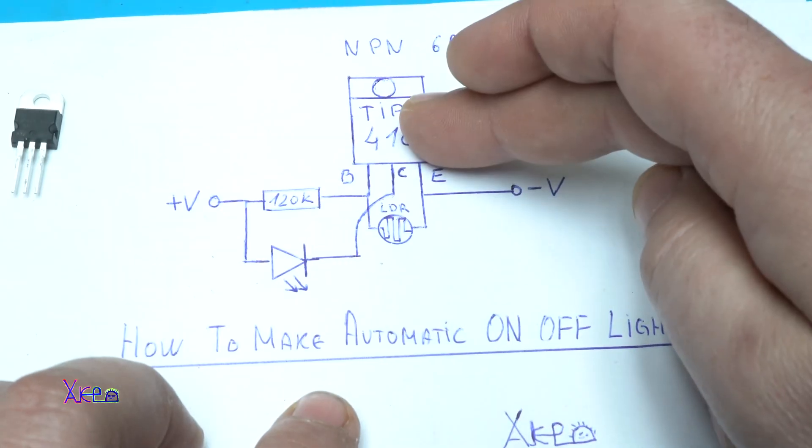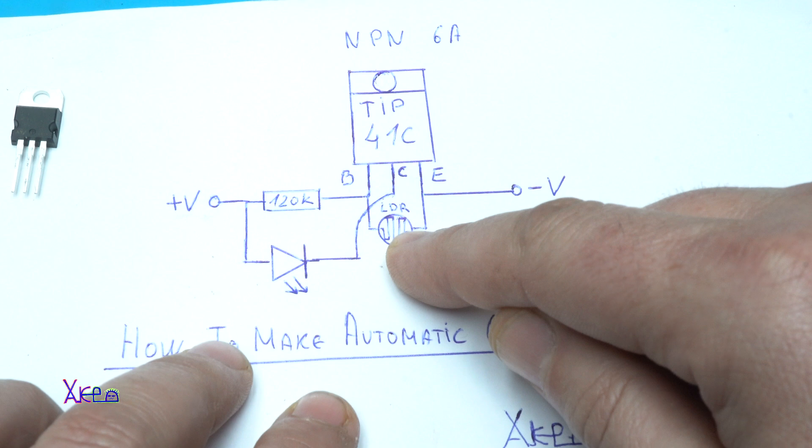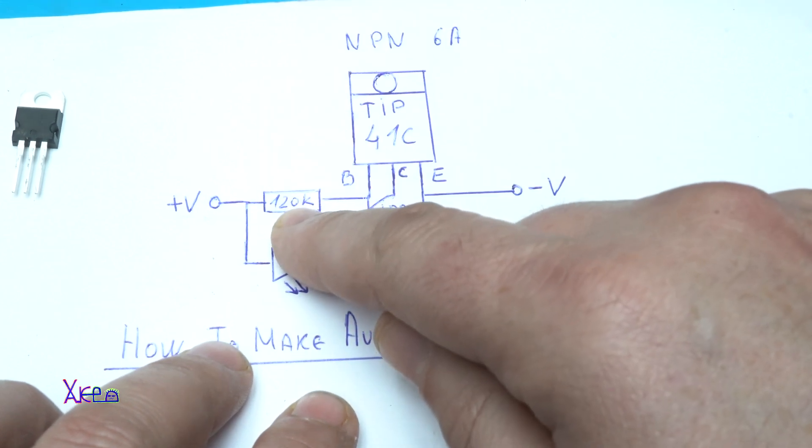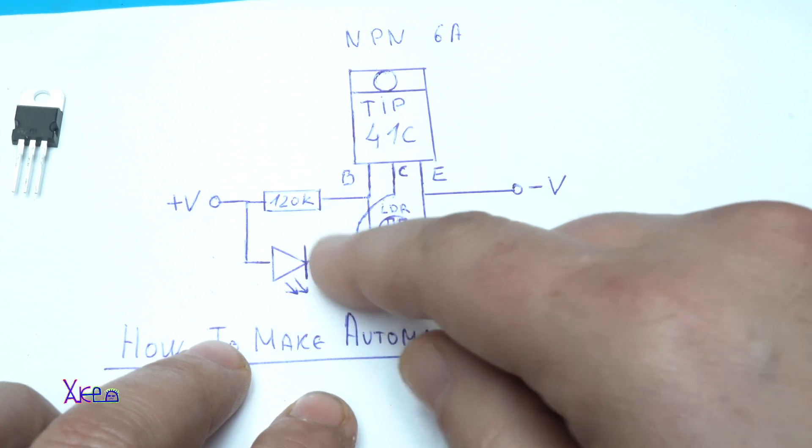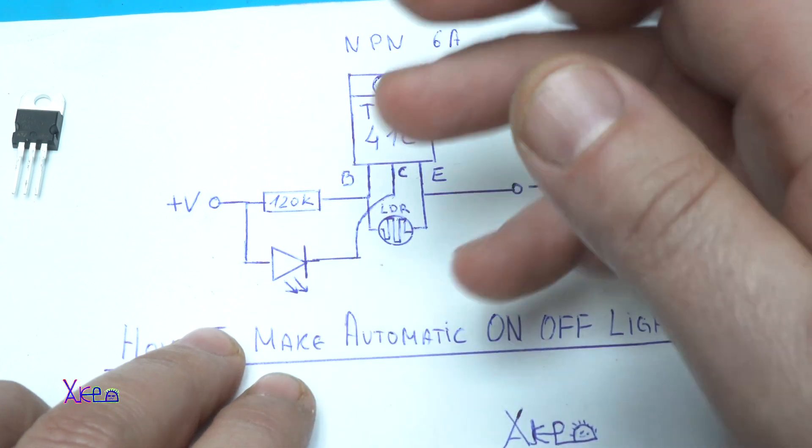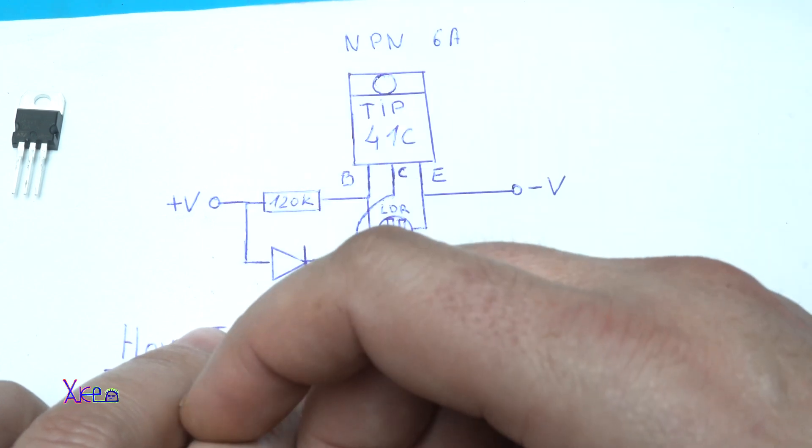The transistor, the photoresistor or LDR, and one resistor of 120 kilohms. The LED can be any type from 3 volts to maximum 12 volts.